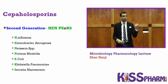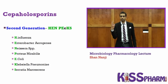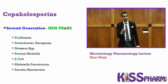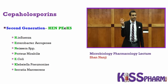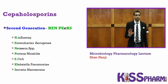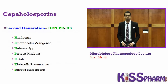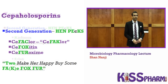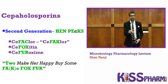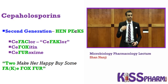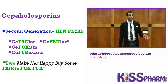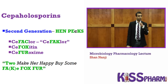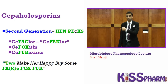First generation has a one-word mnemonic: PEC. Second generation has two words: Hen Pecs. For the drug names, the second generation cephalosporins have 'Fake Fox Fur' in the middle — I don't care about the whole drug name, I just recognize that pattern. When I see it on my test, I click and move.